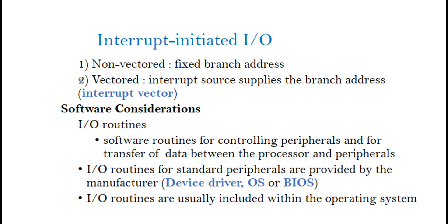Interrupt-Initiated I/O has two types: (1) Non-Vectored — Fixed Branch Address, and (2) Vectored — Interrupt Source supplies the branch address. An Interrupt Vector is used. Software Considerations include I/O Routines — software routines for controlling peripherals and for transfer of data between the processor and peripherals. I/O routines for standard peripherals are provided by the manufacturer as a device driver.